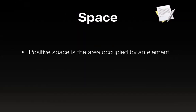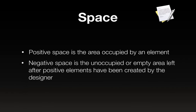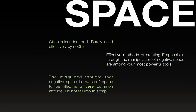Space. We're going to talk about space in this unit and beyond. There's positive space, which is the area occupied by an element — you might call it the foreground or the figure. Negative space is the unoccupied or empty area left after the positive elements have been created or placed by the designer. Space is often misunderstood and rarely effectively used by beginners. Effective methods of creating emphasis through manipulation of negative space are among your most powerful tools. Don't think that empty space is just wasted space — that's a very common attitude and that is a trap. It's misguided; try to shed that attitude.